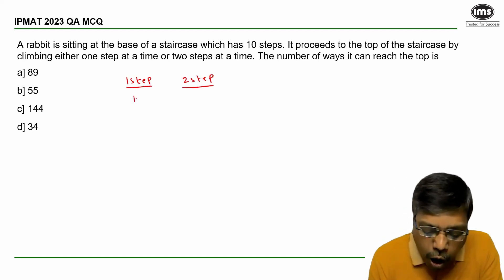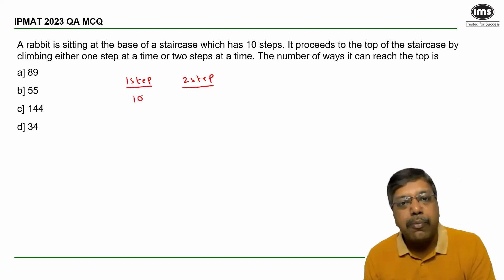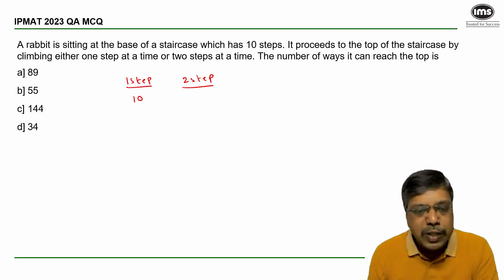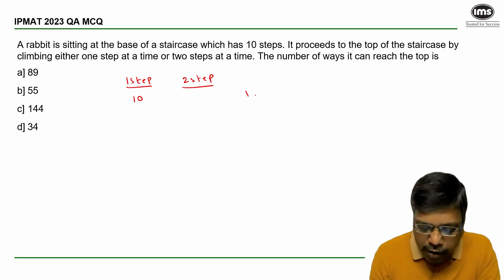Suppose if it makes all 10 steps as single step jumps, there's only one way in which it can be achieved.